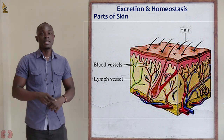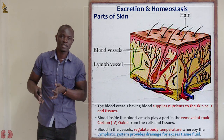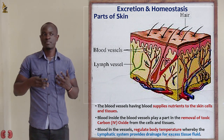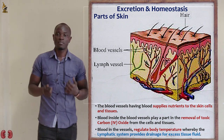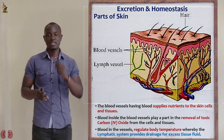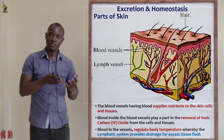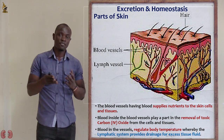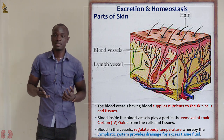Now let's look at the blood vessels and lymph vessels. Blood vessels contain different blood cells which supply nutrients and remove harmful waste materials from the skin, such as nitrogenous waste and respiratory gases like carbon dioxide. Another function of the blood vessels and lymphatic vessels is to regulate the body temperature. The lymphatic vessels also contain lymphocytes, which are white blood cells responsible for fighting harmful microorganisms in the skin.